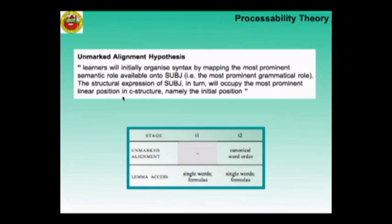The first hypothesis, the unmarked alignment hypothesis: learners will initially organize their syntax by mapping the most prominent semantic role onto the subject, which is the most prominent grammatical role. And the structural expression of subject, in turn, will occupy the most prominent linear position in the C structure — namely the first one.